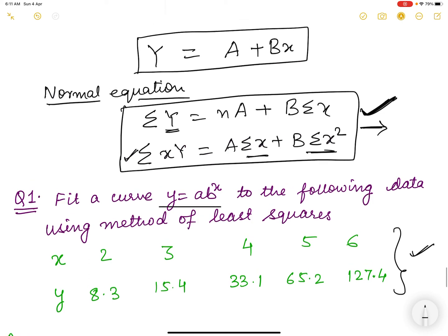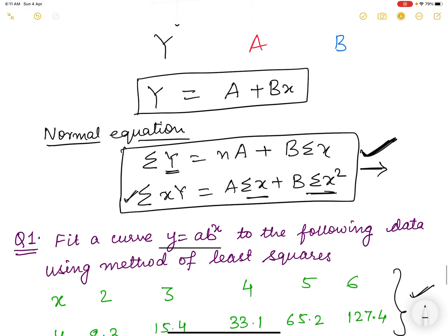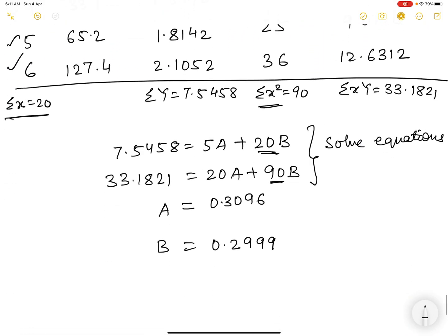If you remember students, our capital A was log to the base 10 A, and capital B was log to the base 10 B. That means that we found the value of log to the base 10 A and we found the value of log to the base 10 B. Obviously, in order to find the value of small a and small b, we need antilog.